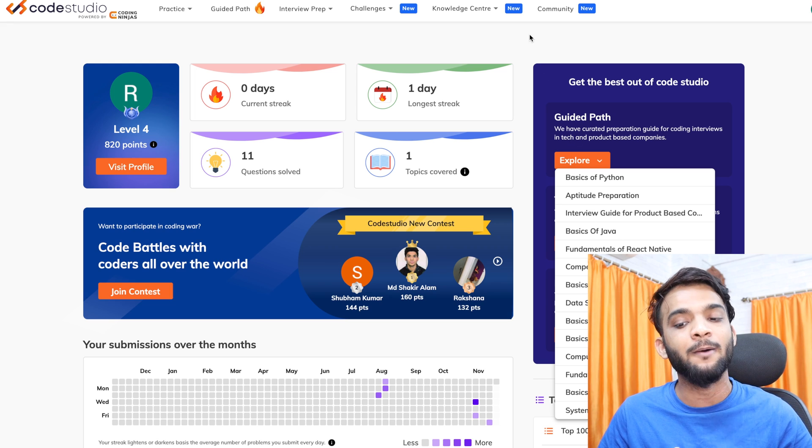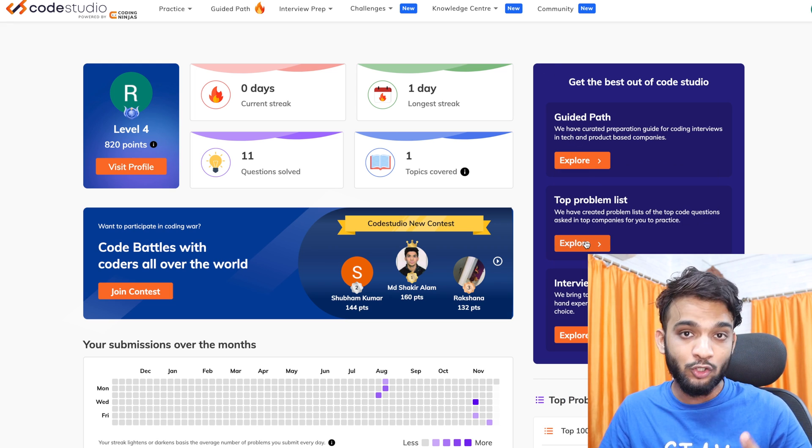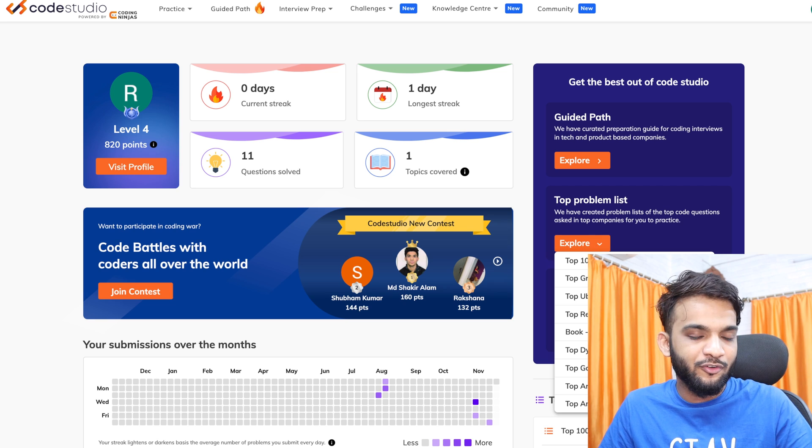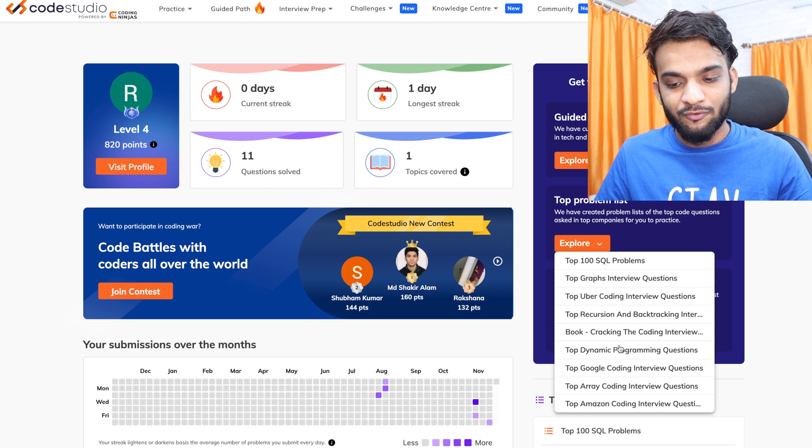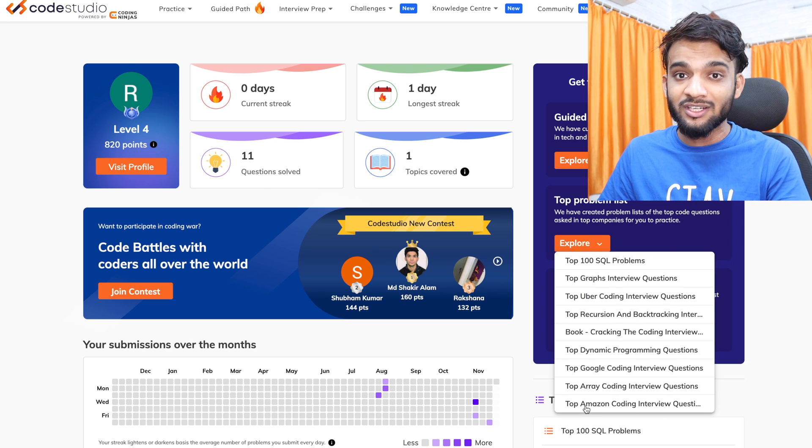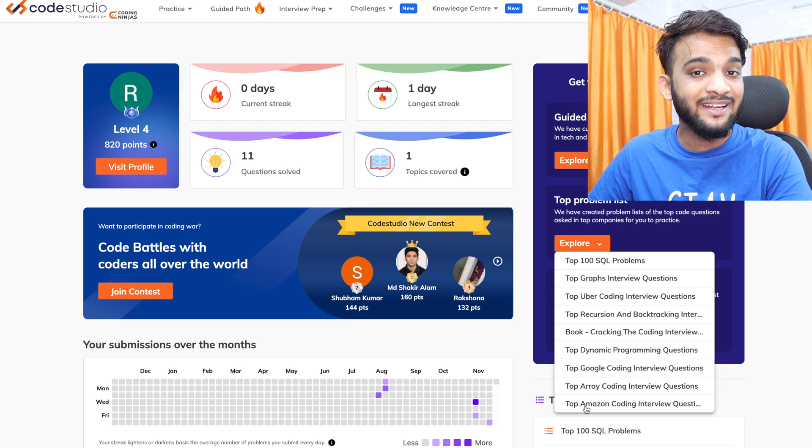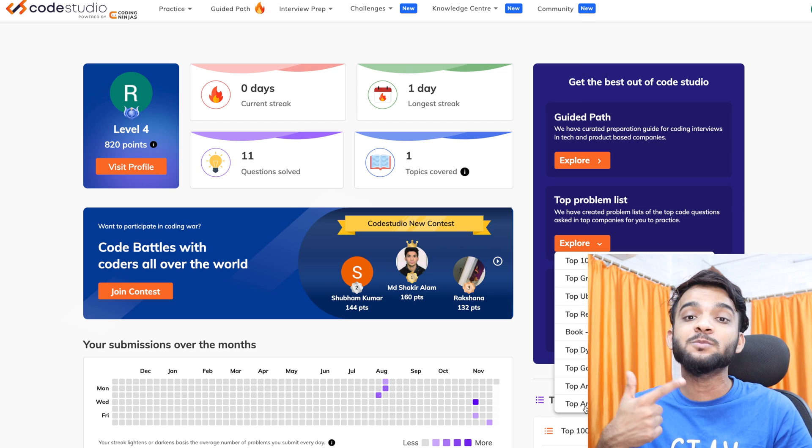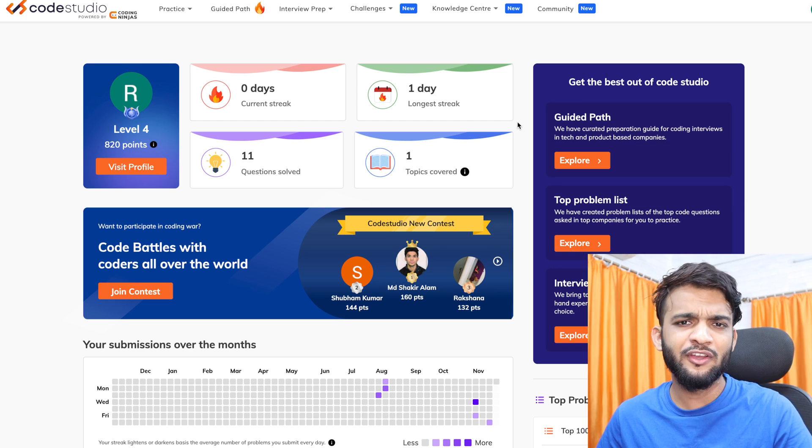If you're looking for any top company questions, let's say if you have an interview at Amazon, you can get all the top Amazon coding questions via tag and all the solutions in C++, Java, as well as Python.